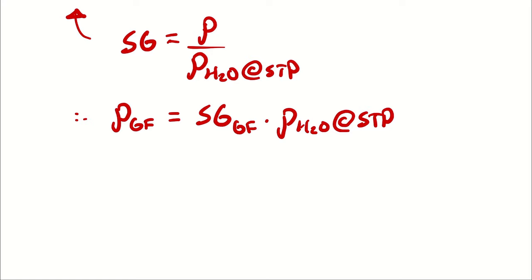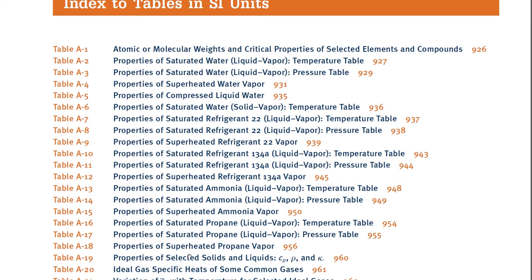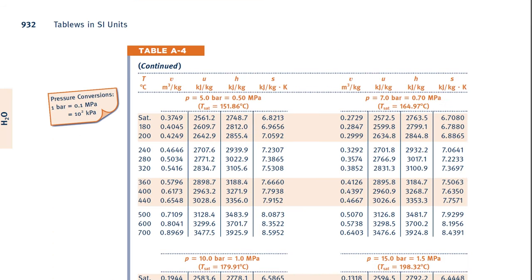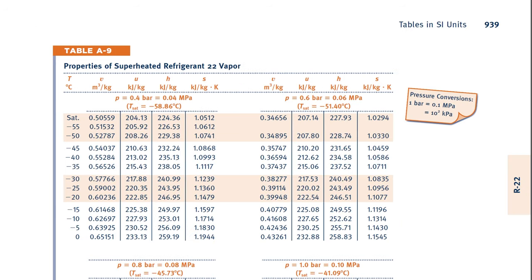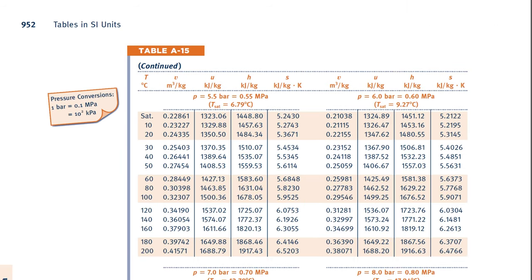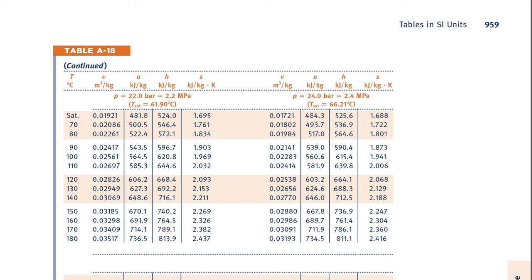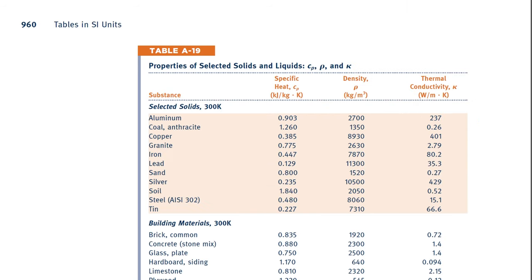Where do we get the density of water at standard temperature and pressure? Remember that anytime we need a material property, we go to our appendices. I want a metric property, which means I'm going to go to our first appendix. And I want the properties of some common liquids, which means that I'm going to go to table A19. Flipping on down through the tables, superheated propane and propane accessories, not quite 19. Table A19.